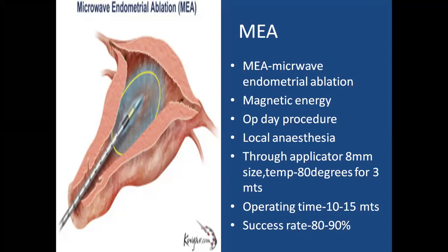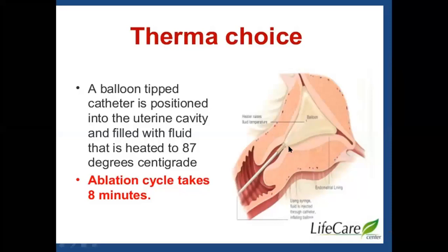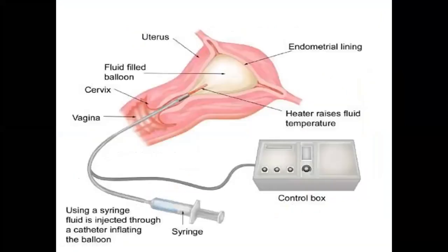For the exam you must know all these names — you may be asked to write the conservative surgical management of AUB, classify the techniques, and mention two or three points about each. Thermal balloon ablation: the balloon instrument is introduced into the uterine cavity, the balloon is inflated with fluid and heated to 87 degrees to cause ablation; the cycle takes eight minutes. Fluid is introduced with a syringe and temperature is increased for ablation.